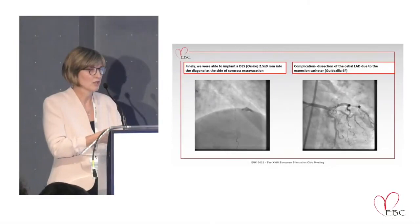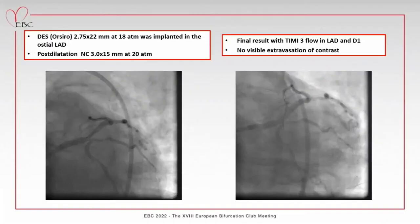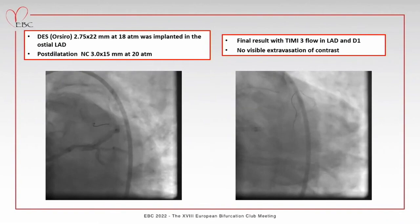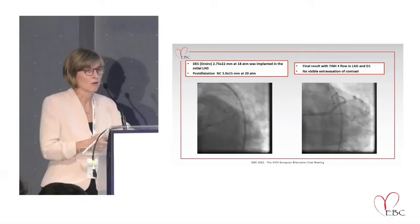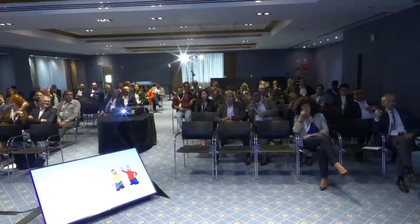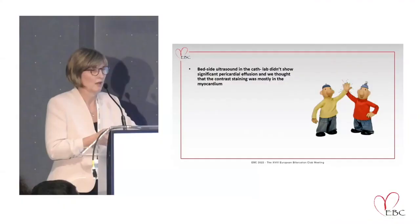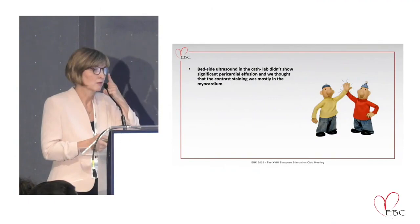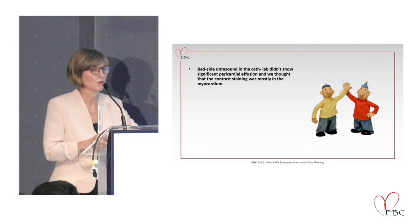I placed a stent into the ostium of the LAD. The final result showed TIMI 3 in the LAD and TIMI 3 in the diagonal branch. There was no more contrast extravasation. Echo was fine but there was a slight dissection in the ostium of the diagonal with TIMI 3 flow. I decided not to go there anymore. Which stent was used? A Graft Master - the old, very bulky one.